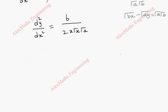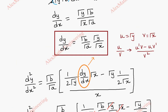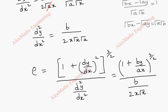Now coming to the formula, radius of curvature rho equals 1 plus dy by dx whole squared, whole power 3 by 2, divided by d²y/dx². So this becomes 1 plus dy by dx squared. We already have dy by dx as root b by root a into root y by root x, so squaring gives by by ax. The numerator becomes 1 plus by by ax, with whole power 3 by 2, and denominator is b by 2x root x into root a.